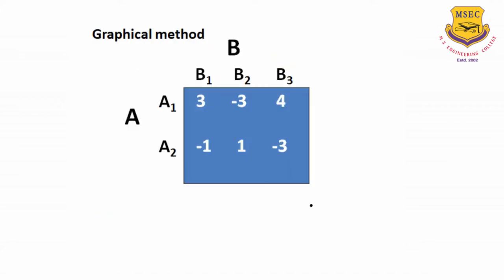Now we have another method of solving game theory problems using the graphical method. Here we solve by graphical method to find out what strategies to use. We convert it into a 2x2 matrix — that means A playing with 2 strategies and B playing with 2 strategies. Here we have a 2x3 matrix that we convert into a 2x2 matrix by deleting one of the strategies of B using the graphical method.